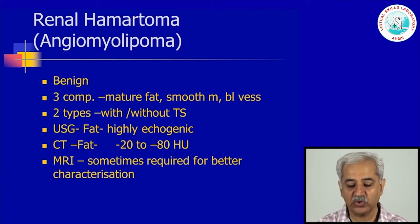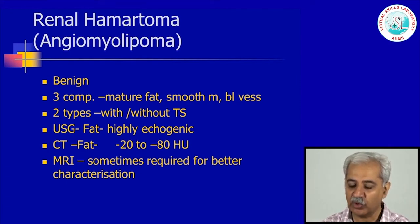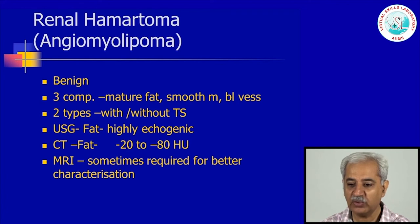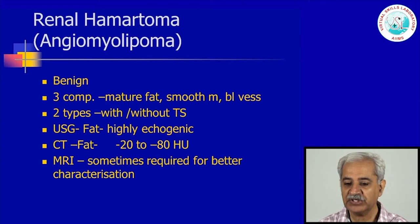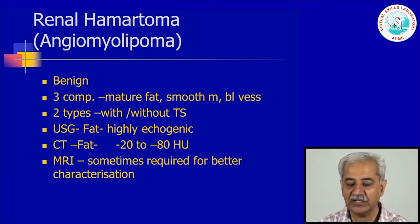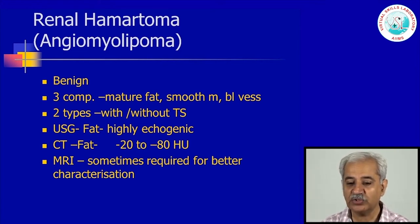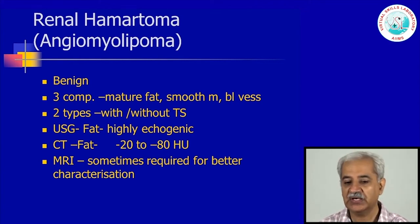The renal hamartoma is also known as a renal angiomyolipoma. This is a benign tumour with three components: mature fat, smooth muscles, and blood vessels — that is why it is called angiomyolipoma. There is a very common association between tuberous sclerosis and angiomyolipoma; patients with typical features of tuberous sclerosis have a very high incidence of angiomyolipoma. There are two types: the sporadic variety and the variety associated with tuberous sclerosis. On ultrasonogram, fat is highly echogenic, and a highly echogenic tumour strongly suggests angiomyolipoma.